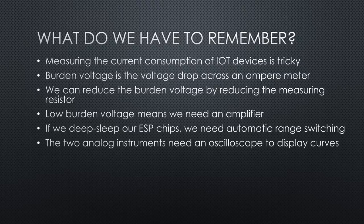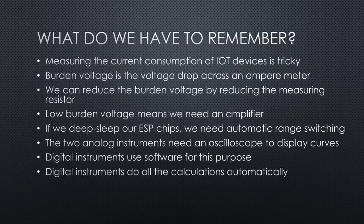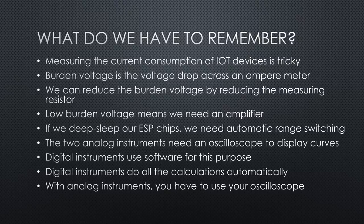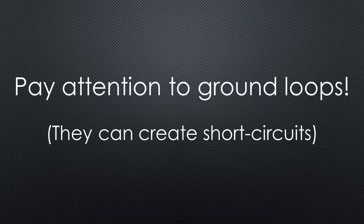So, we need automatic range switching. The two analog instruments need an oscilloscope to display current consumption curves. Digital instruments use software for this purpose. Digital instruments do all their calculations automatically. With analog instruments, you have to use the math functions of your oscilloscope.